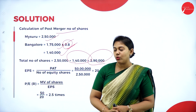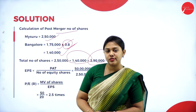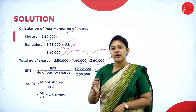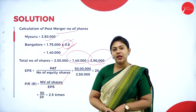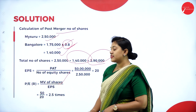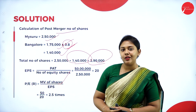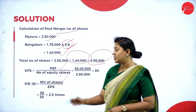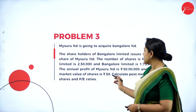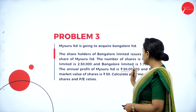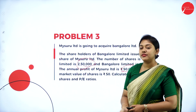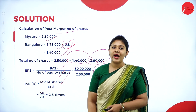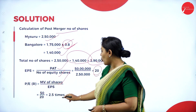Now we need to calculate the price-to-earnings ratio. Formula: market price per share divided by EPS. EPS is not given, so we calculate: profit after tax divided by number of equity shares. Profit after tax is 50 lakh and the number of shares is 2,50,000. Dividing gives EPS of 20. Substituting into the PE ratio formula gives an answer of 2.5 times.